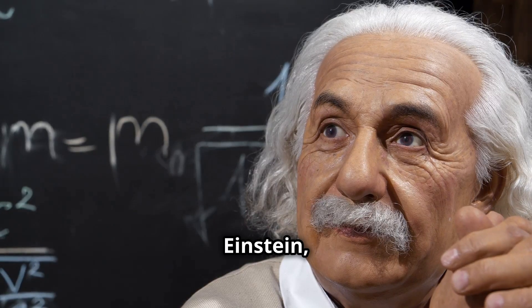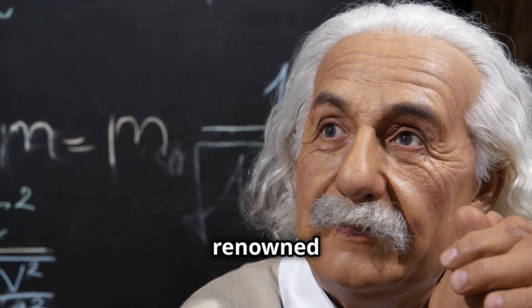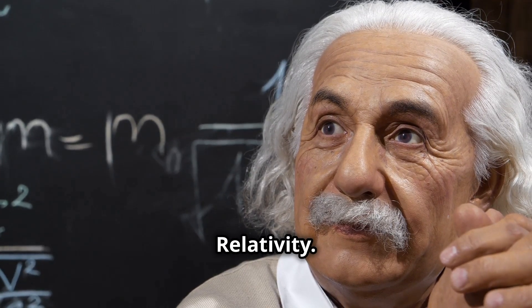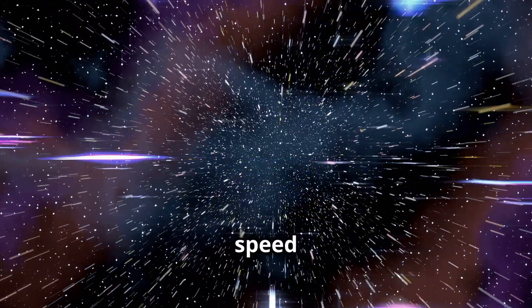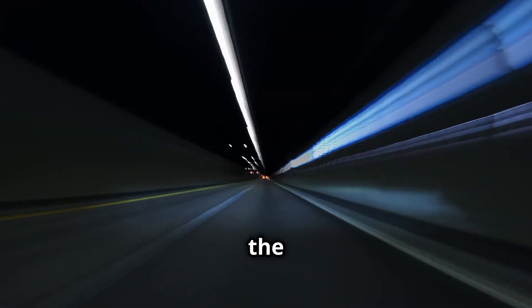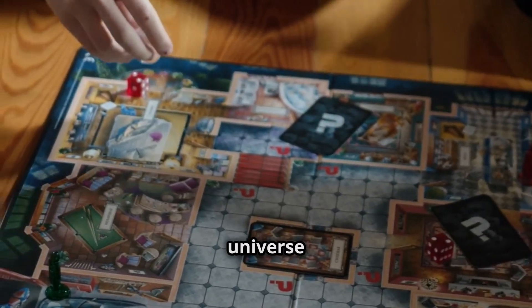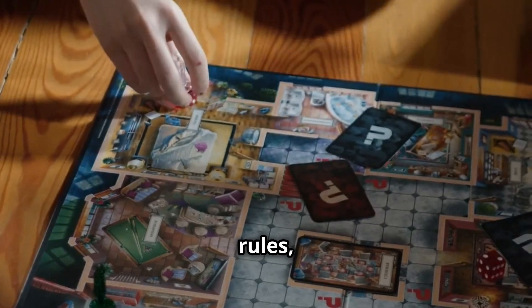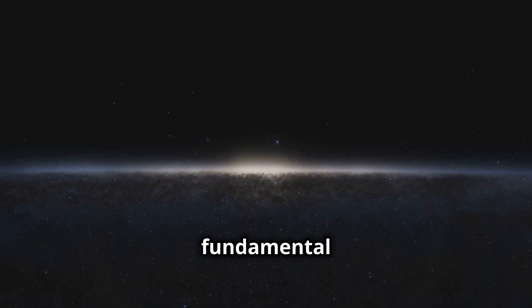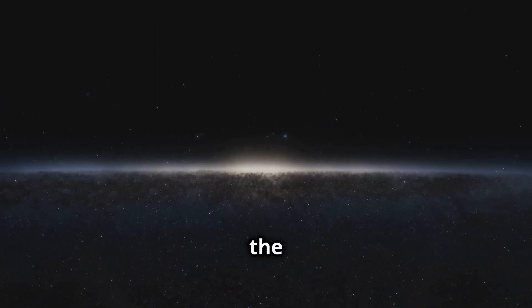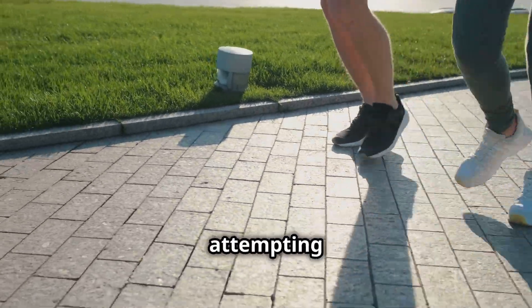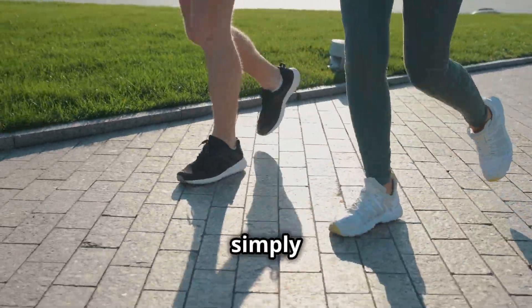Albert Einstein, the luminary of physics, introduced the renowned theory of special relativity. This theory asserts that nothing can surpass the speed of light. The speed of light is the ultimate speed limit of the universe. Consider it this way. The universe operates under specific rules much like a game. One of the fundamental rules is that nothing can exceed the speed of light. It's akin to attempting to outrun your own shadow. It simply isn't feasible.